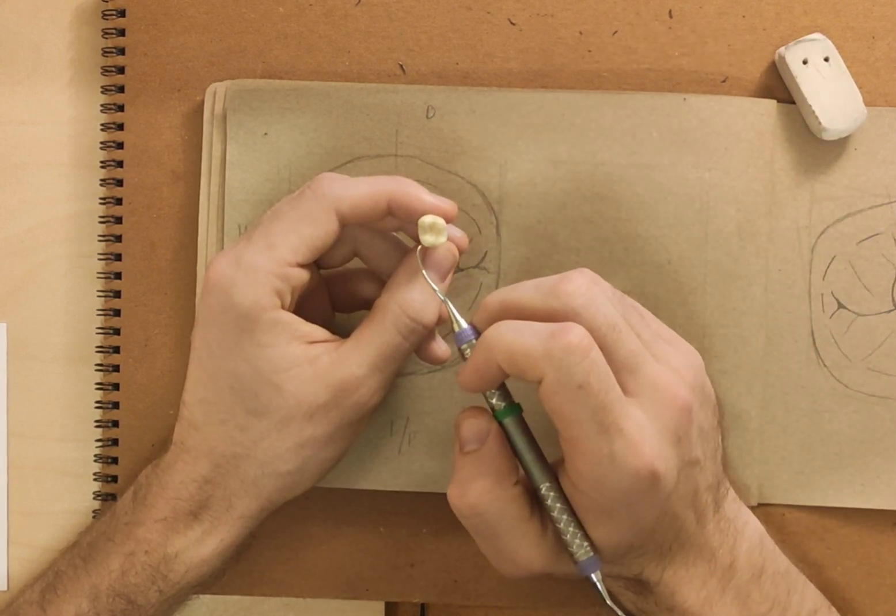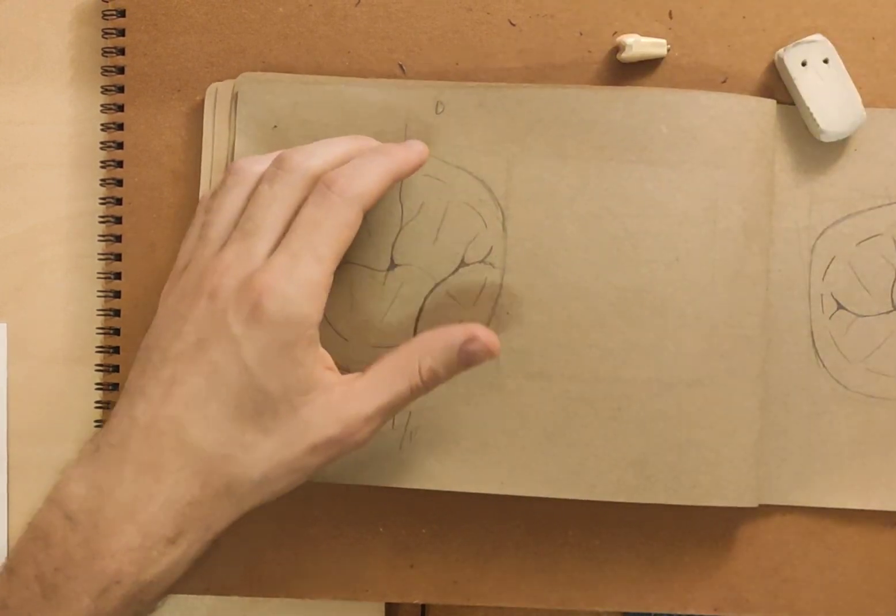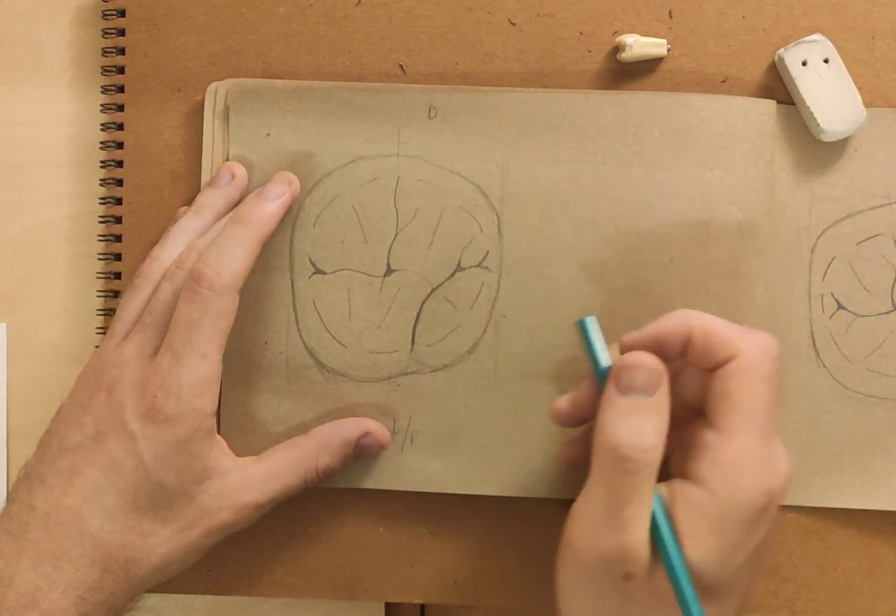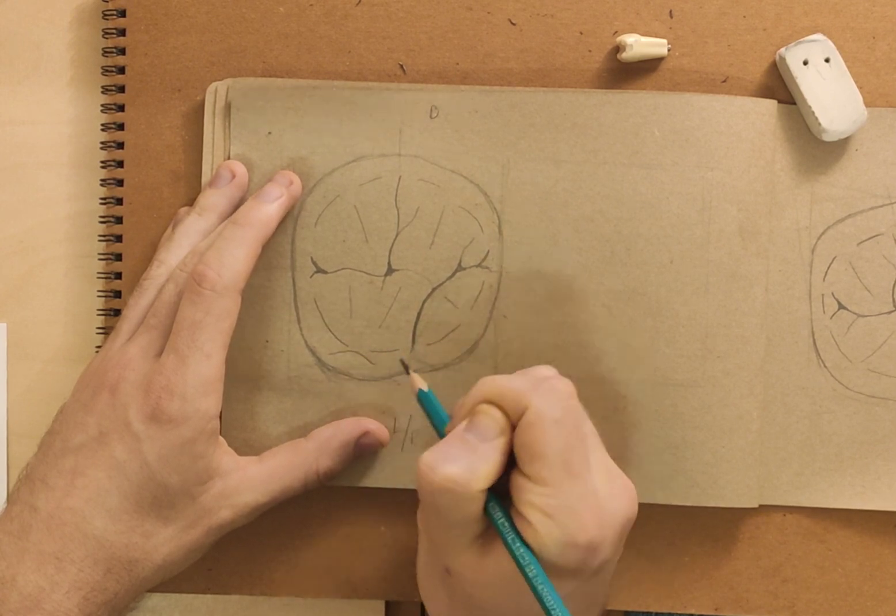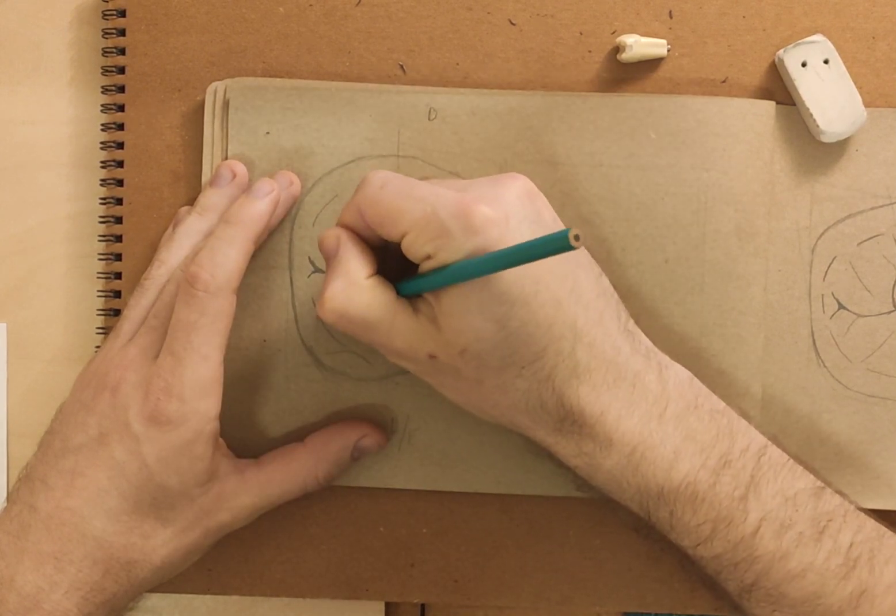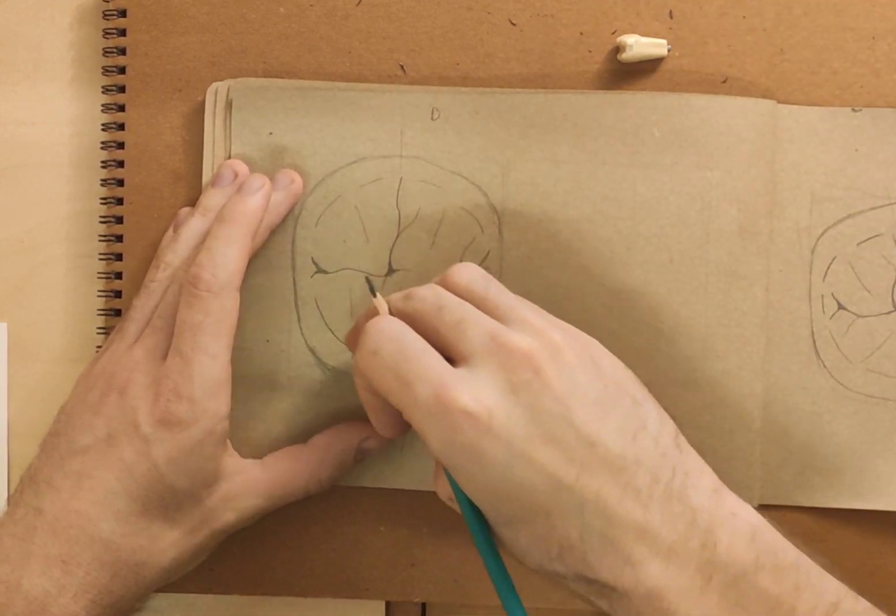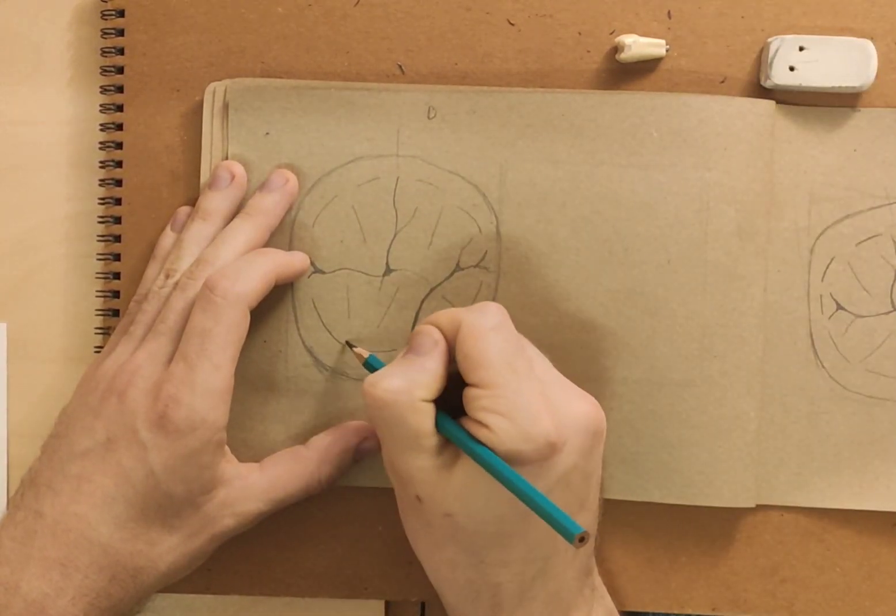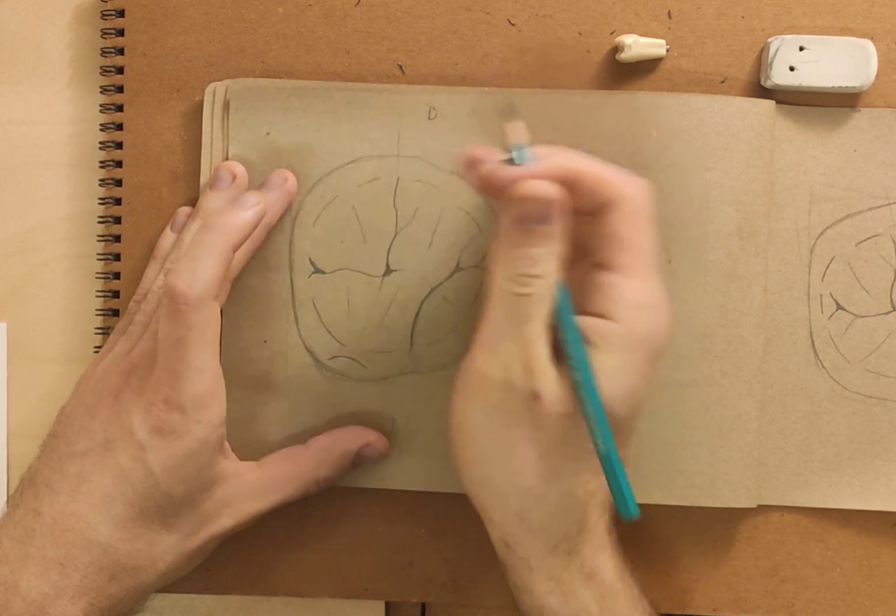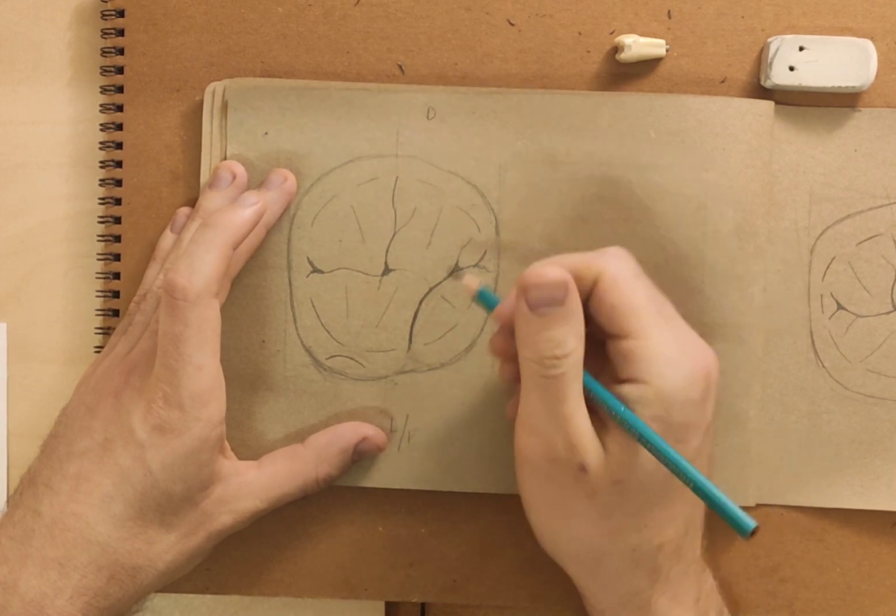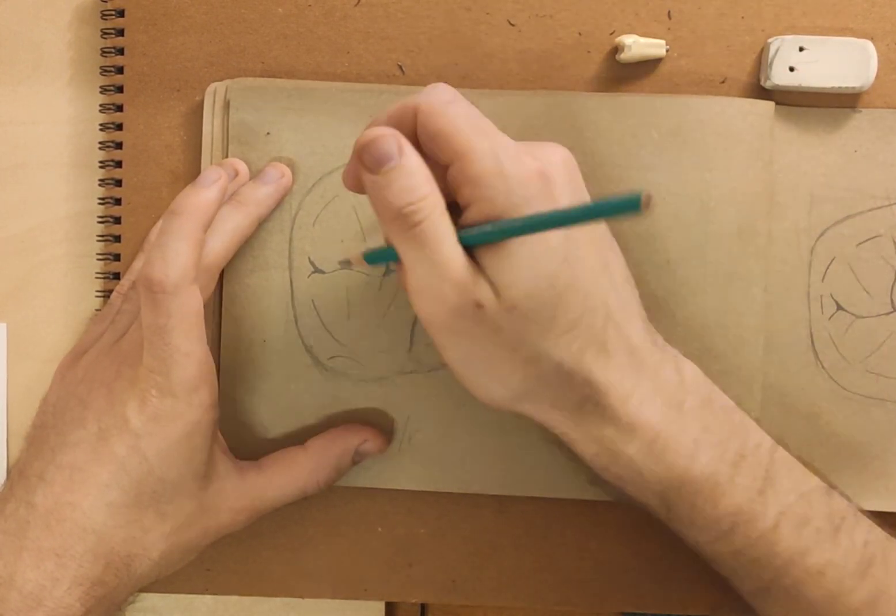And for this tooth you also have this, what it's called, a tuberculum carabelli. And if you want to draw it, you can draw an indication for it here. Below the cusp. It should maybe even lower actually. It should not cross this line of course. You can draw an indication that it is there somewhere. So in essence, this would be it.